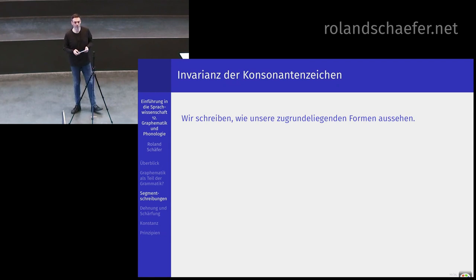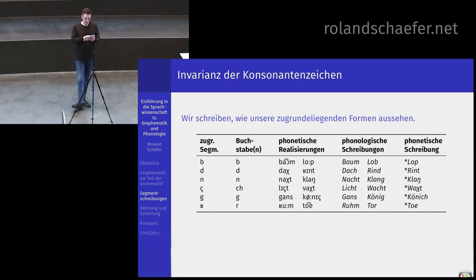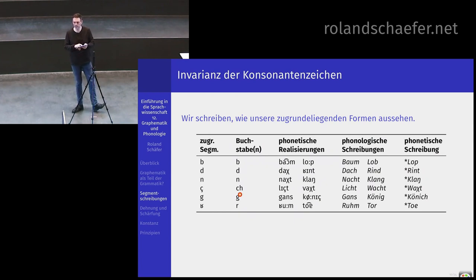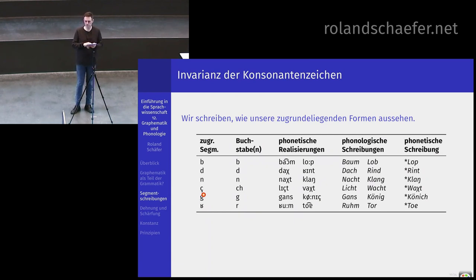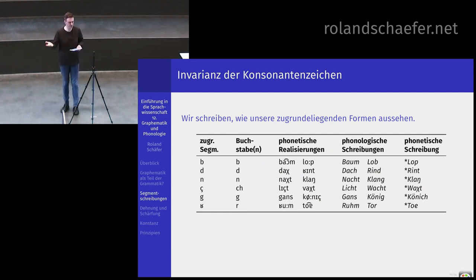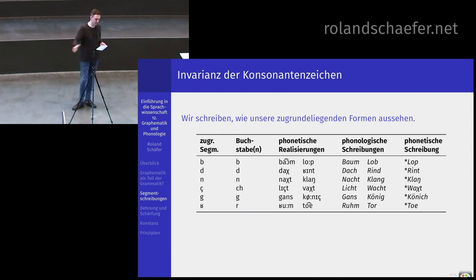Die Invarianz können wir jetzt noch mal genauer illustrieren. Wäre das nicht so, würden wir also die Auslaut-Desonorisierung und die G-Spirantisierung schreiben, dann bräuchten wir sowas hier: wir würden nicht Lob mit B schreiben, sondern Lob mit P, weil so sprechen wir es auch. Wir müssten auch Rind schreiben: Rindes mit D, aber das Rind mit T. Wir müssten uns für Klang etwas ausdenken – da gab es die interessante Tatsache, dass das zugrunde liegend eigentlich ein N und ein G ist, genauso wie wir das schreiben.